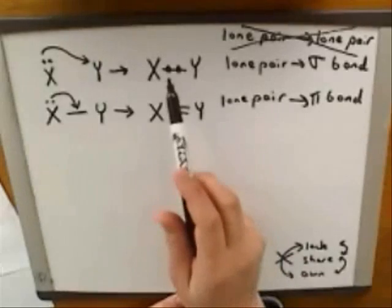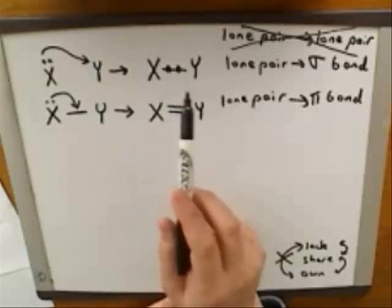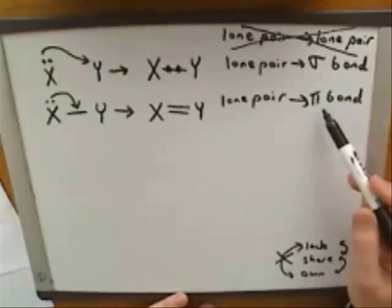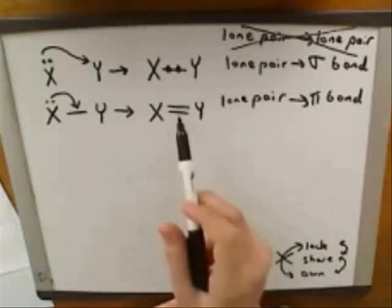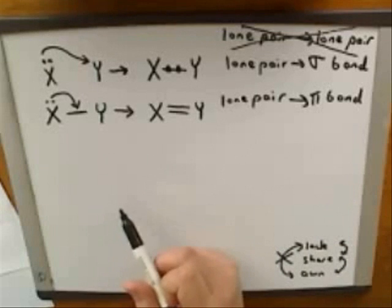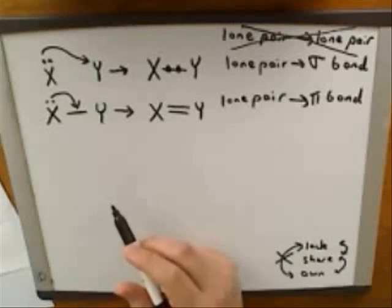So again, a single bond is a sigma bond, but when you formed a second bond or a third one, that's called a pi bond. So here we were taking the lone pair and forming a pi bond, a second bond in this region. So this is a new type of transition that we haven't talked about yet.